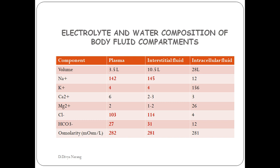When serum osmolality becomes too dilute — less than 280 mOsmol/kg — excess water is excreted by the kidneys as dilute urine. Conversely, when serum osmolality becomes too concentrated — more than 290 mOsmol/kg — ADH (antidiuretic hormone or vasopressin) is released and thirst results in water retention to bring the system back into balance. Albumin is mainly responsible for maintaining osmotic balance through oncotic pressure, relevant to Starling forces and edema development.